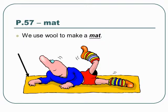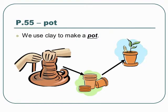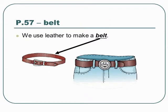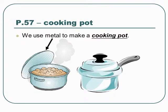We use wool to make a mat. We use clay to make a pot. We use clay to make a bowl. We use leather to make a belt. We use metal to make a cooking pot.